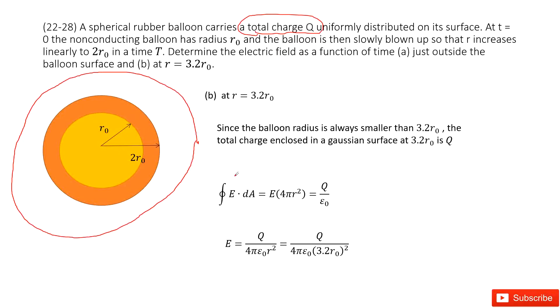And then we can apply Gauss's law. Electric field times Gaussian surface equals the enclosed charge divided by epsilon naught. And this R is a constant, 3.2R₀. You input it there. Then you get the final answer. Thank you.